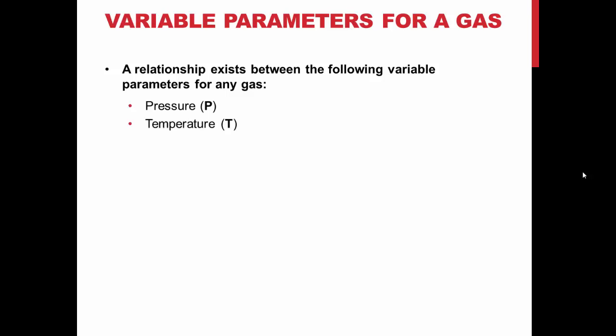The ideal gas law describes the relationship between several variables that are important to know when experimenting with gases. These are the pressure in atmospheres, the temperature in degrees Kelvin, the number of moles, and the volume in liters.